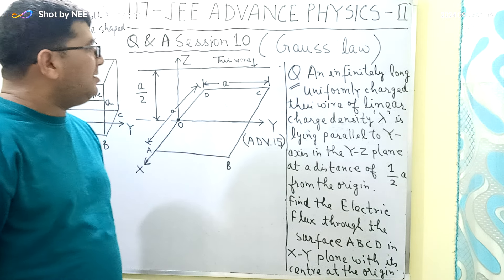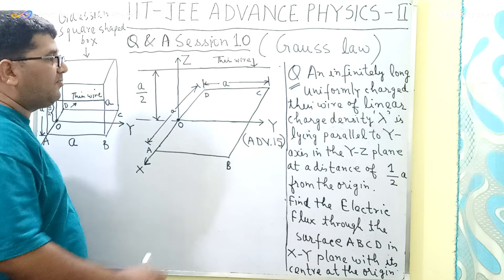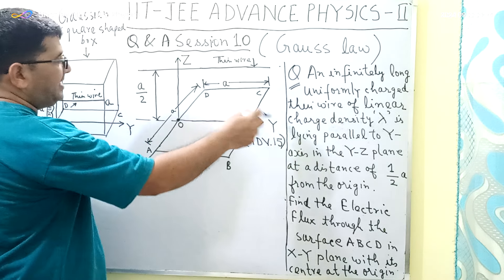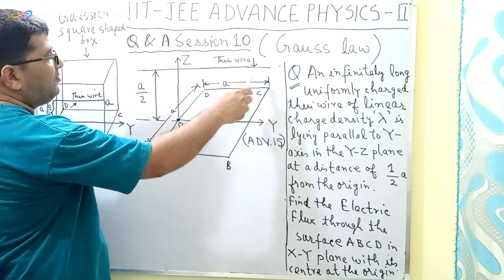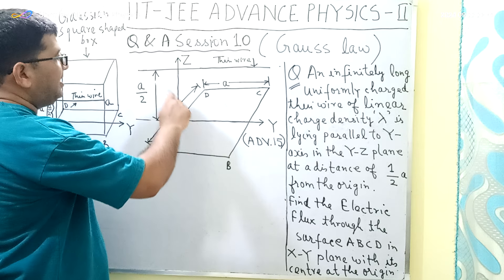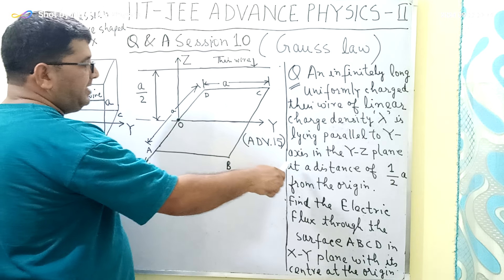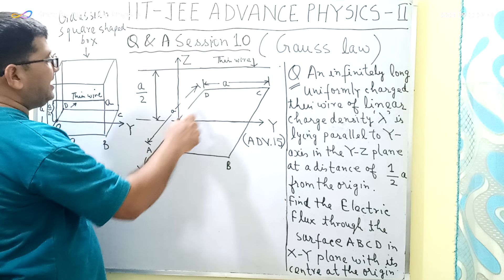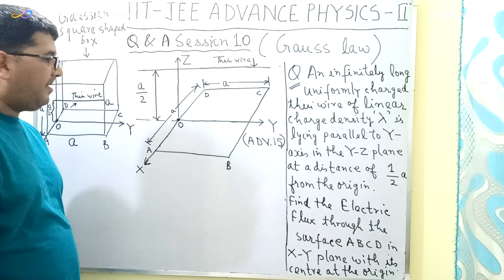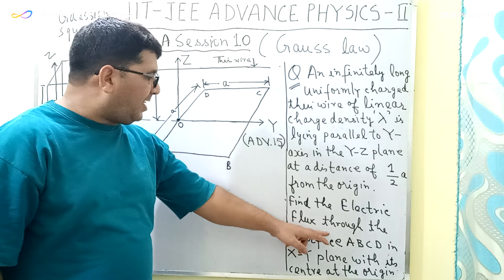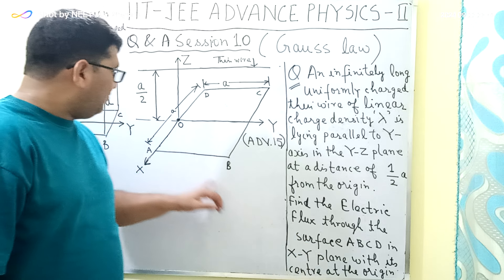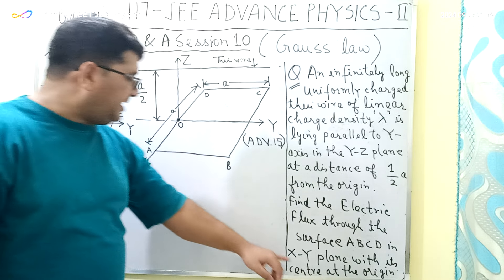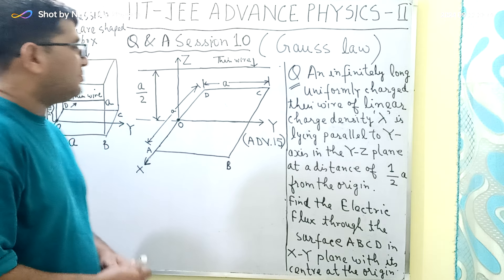The question is: an infinitely long uniformly charged thin wire of linear charge density lambda is lying parallel to the y-axis in the y-z plane, at a distance of a/2 from the origin. We have to find the electric flux through the surface ABCD, which is lying in the x-y plane with its center at the origin.